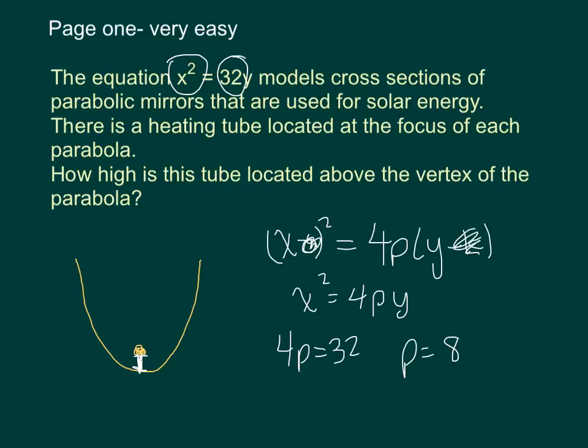So now I know that 4p = 32, so p in this case is 8. So that's really what the question was asking, because we know the focus is going to be p units or 8 units from the vertex, so we should locate the heating tube 8 units above the vertex.